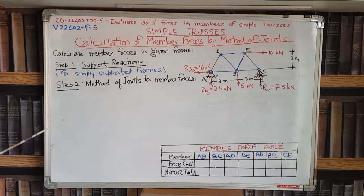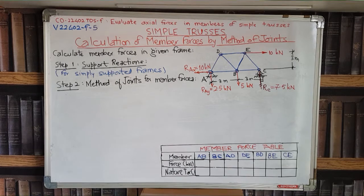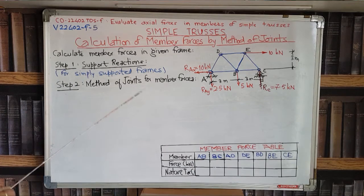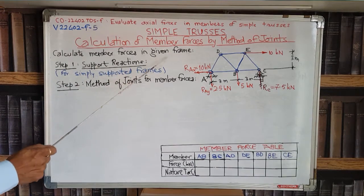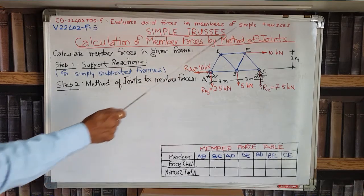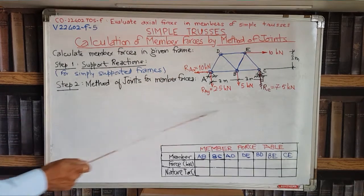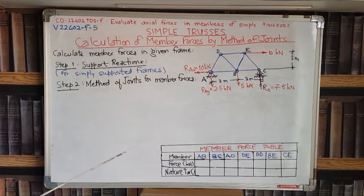We have seen already that there are two analytical methods. One is method of joints and the other is method of sections. So we are going to take a numerical example on method of joints in this lecture. The problem is: calculate member forces in the given frame. Now we will start solving the problem step by step.